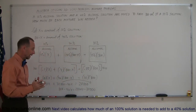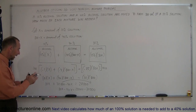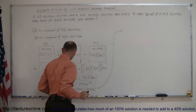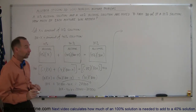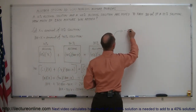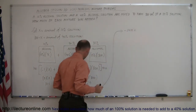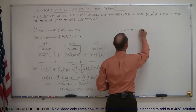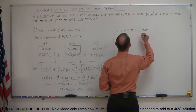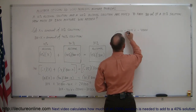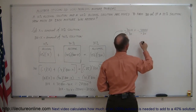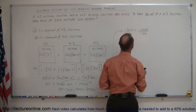Combine like terms: 10x − 40x = −30x, and 28,000 − 32,000 = −4,000. So −30x = −4,000. Divide both sides by −30, and the negatives cancel out with two zeros canceling as well.